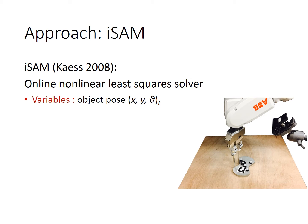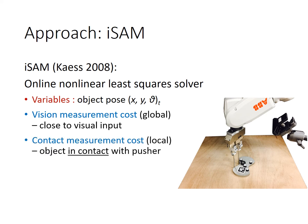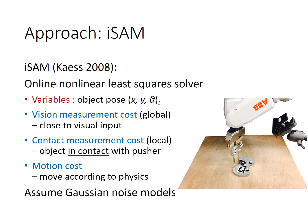The variables are the pose of the object at every time step. We add the following cost functions: first, enforce that the pose should be close to visual inputs; second, enforce that the object should be right in contact with the pusher when contact is detected; and third, enforce that objects should move according to physics. We assume Gaussian noise models.